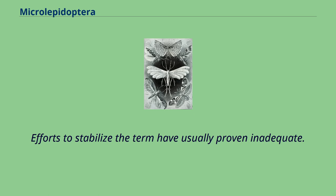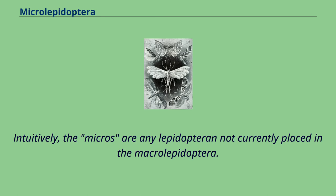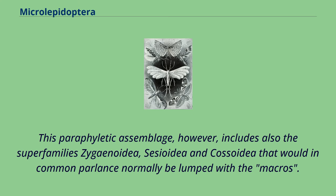Efforts to stabilize the term have usually proven inadequate. Vernacular usage divides the lepidoptera simply into smaller and larger, or into more primitive and less primitive groups — microlepidoptera and macrolepidoptera, respectively. Intuitively, the micros are any lepidoptera not currently placed in the macrolepidoptera. This paraphyletic assemblage, however, includes also the superfamily zygonoidea, cijoidea and cossoidea that would in common parlance normally be lumped with the macros.